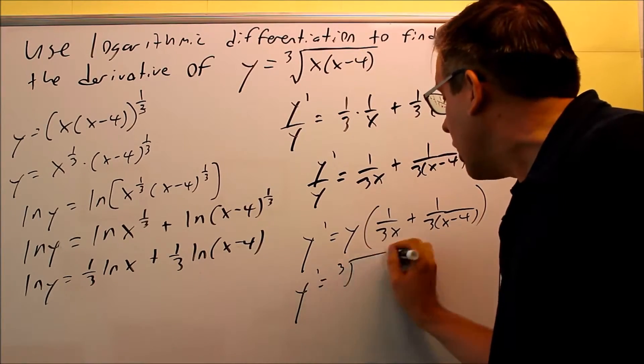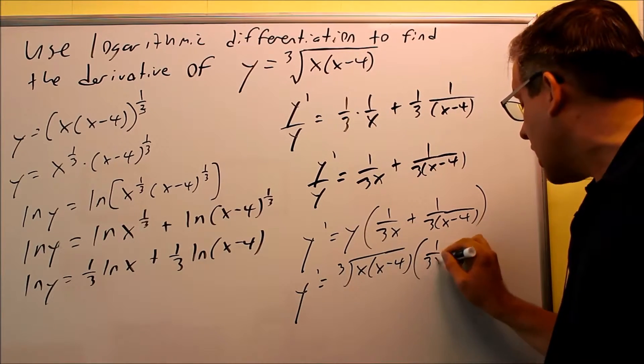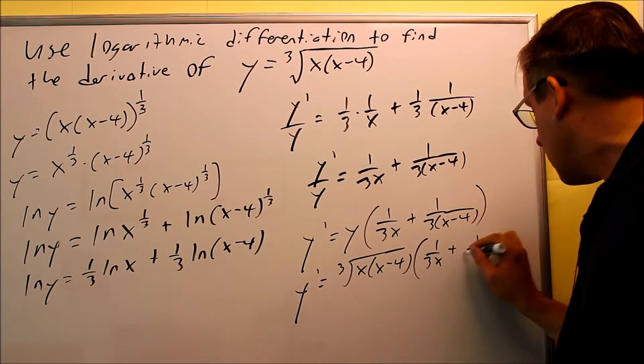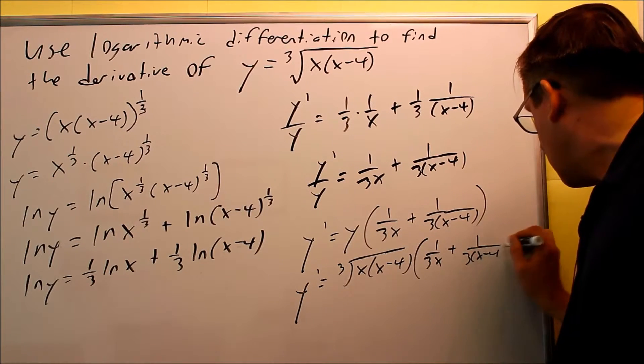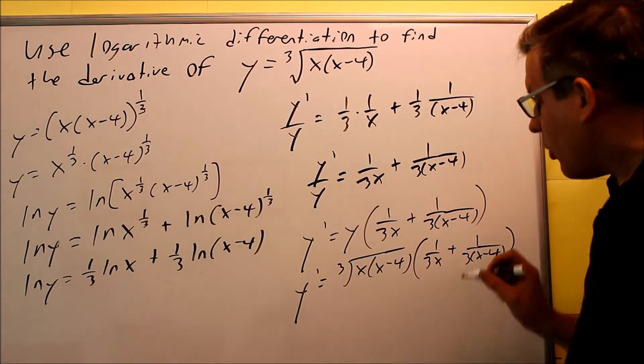So the y, we're just going to put in the original one that we had. So y prime is going to be the cube root of x times (x - 4), all that, and then times all this. We don't need to worry about foiling all that out. We can leave our answer in that form.